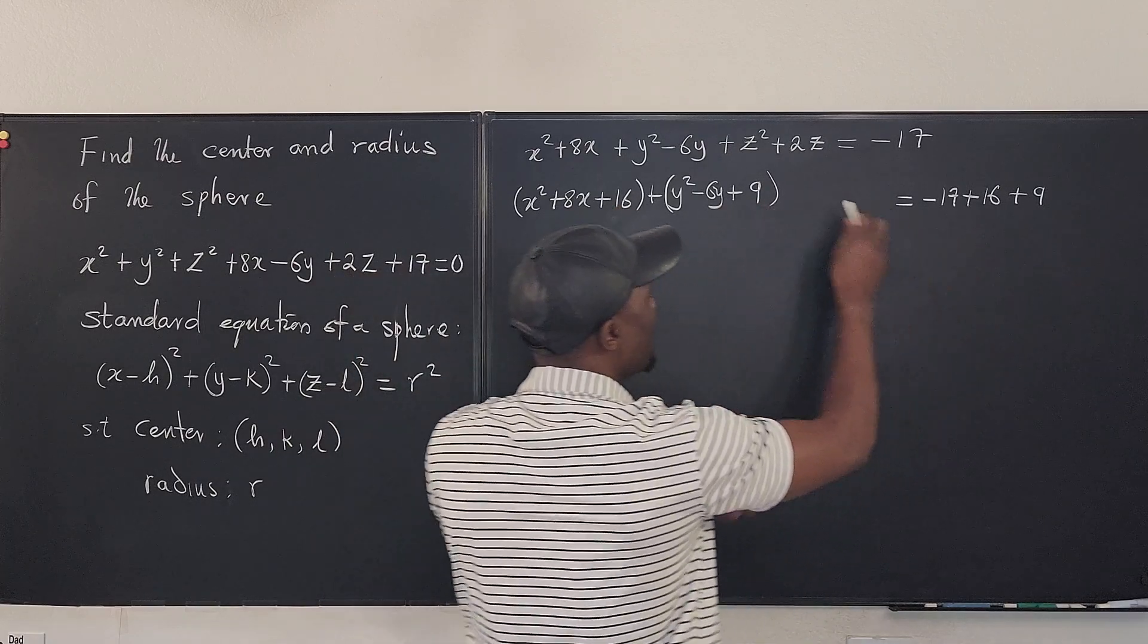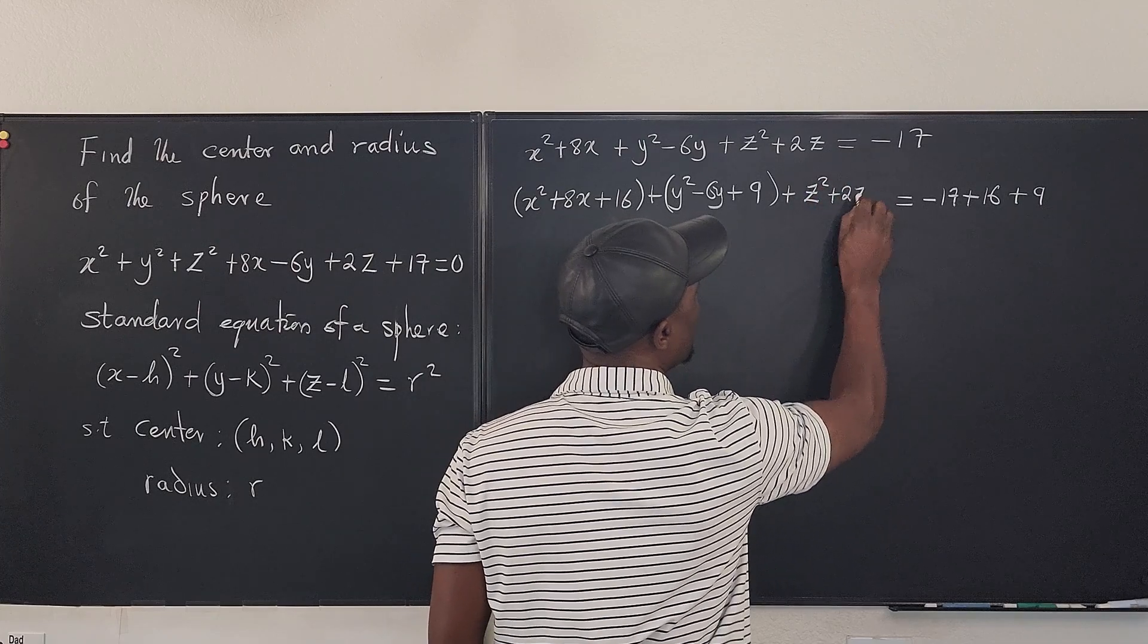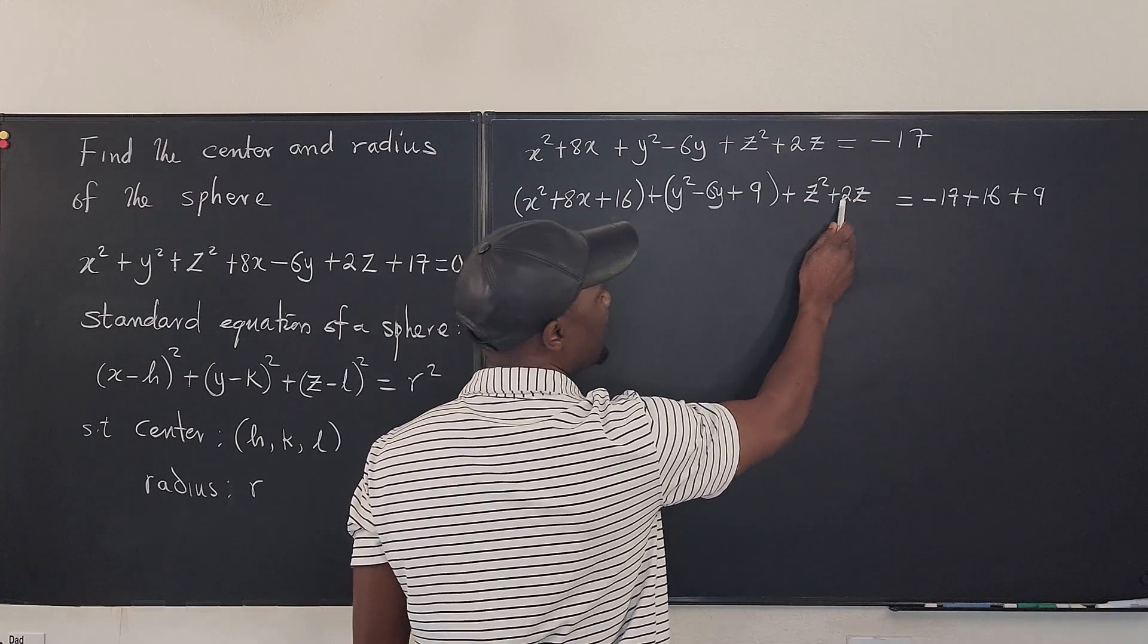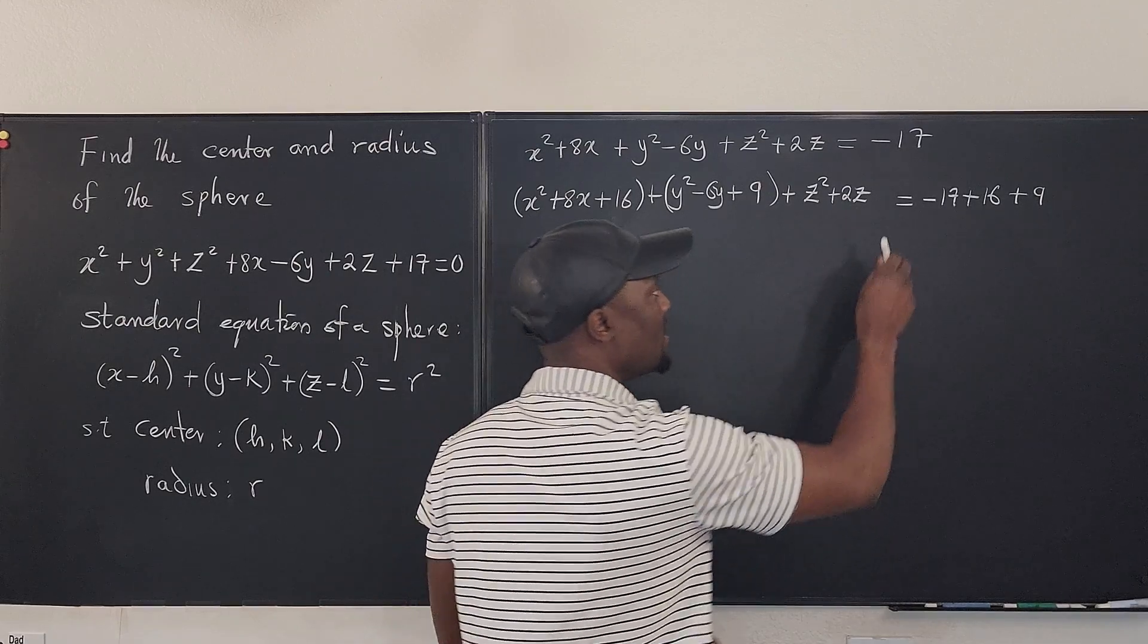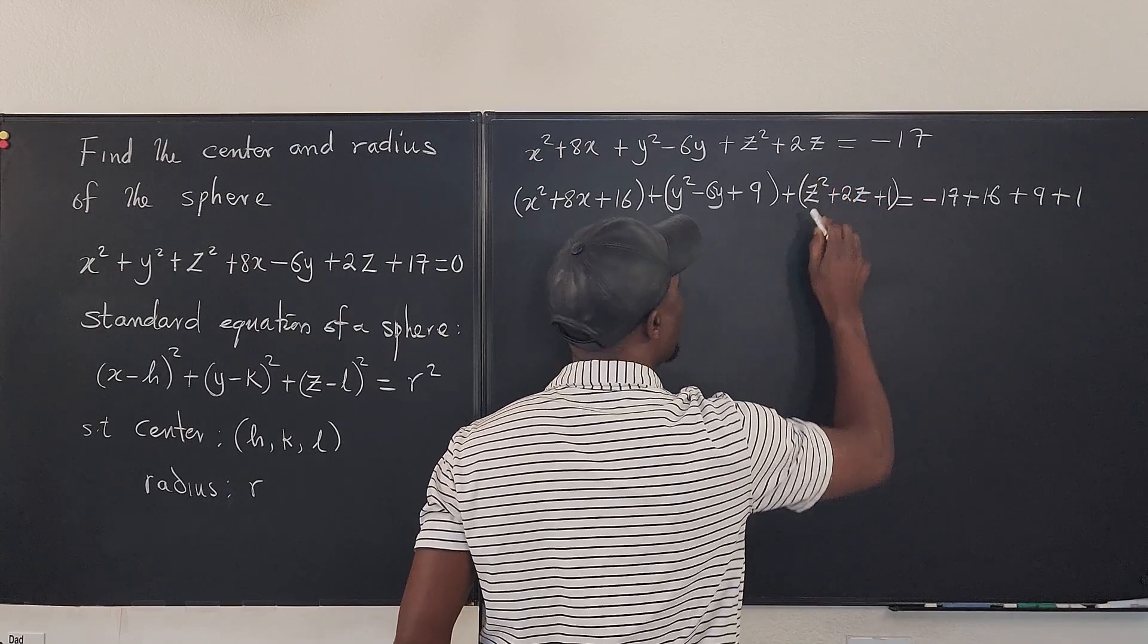I'm also adding. And the last one is going to be plus z² + 2z. And half of this is 1. 1 squared is 1. So it's just plus 1. And we add plus 1. And this is what we have.